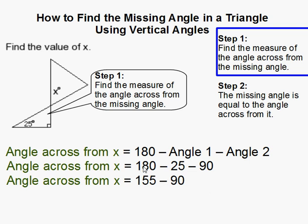So I subtracted 180 minus 25 and I got 155. And then 155 minus 90 gives me 65 degrees.